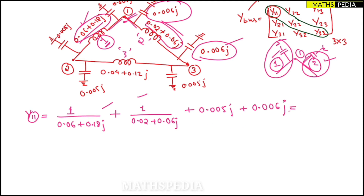When you calculate all of this, Y11 = 6.67 − j19.89. Now let us go for the next diagonal element Y22, remembering the rule set is different for off-diagonal elements.